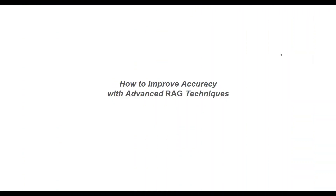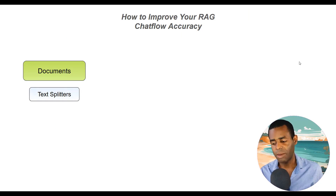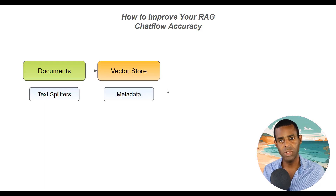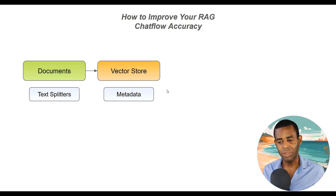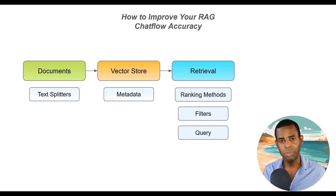The first phase is documents — making sure that we have the best information possible. After that, we can focus on using text splitters to break documents into the right segments so our LLMs can use them later. The next step is the vector store, either optimizing it using metadata or adding other types of information. And then after that comes retrieval — there are a number of methods that can improve the retrieval process to make sure the documents our LLMs use are the best possible.